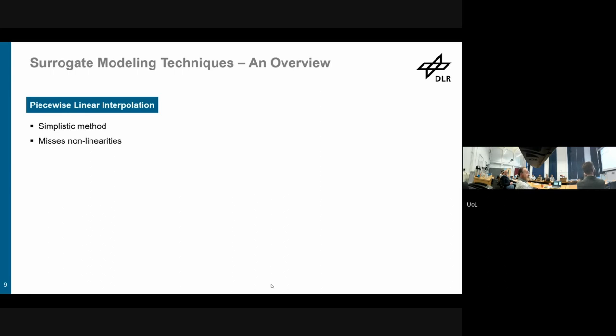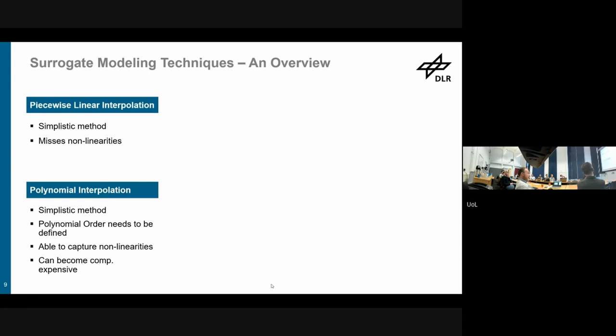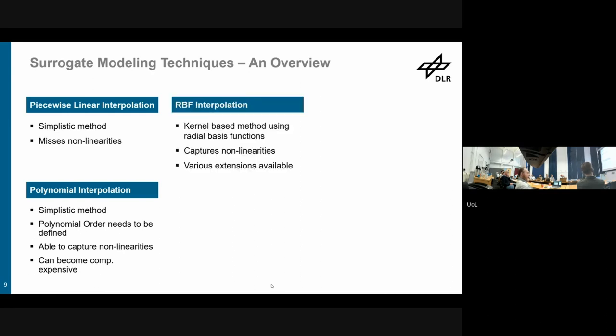I believe it's greatly used throughout engineering if people want to admit it or not. Generally, I would say quite a lot of people do this. You could also do polynomial interpolation. It's still a fairly simplistic method, but you have to preset the polynomial order. You might be able to capture some nonlinearities if you do a lot of polynomials and combinations. It becomes computationally expensive. You can do some radial basis function interpolation, so it's a kernel-based method using radial basis functions. It can capture nonlinearities, there are various extensions available, and I would say it's a fairly commonly used method for surrogate models.